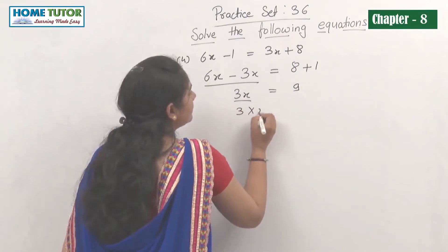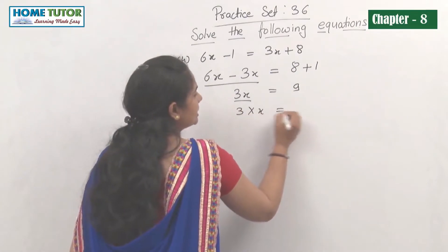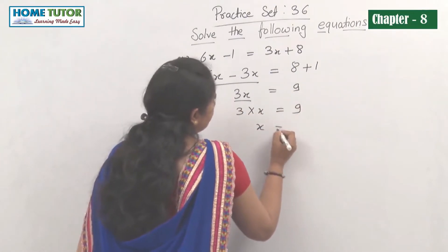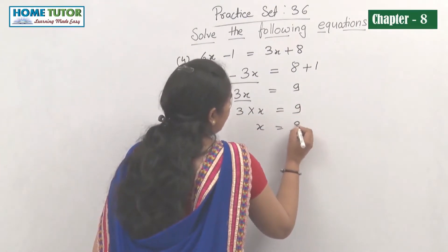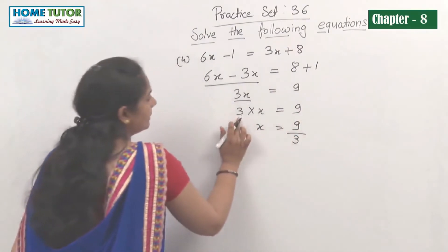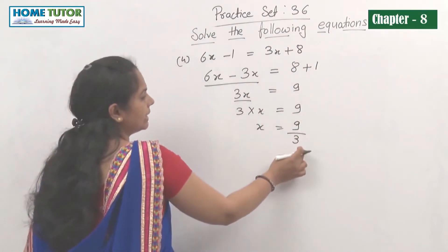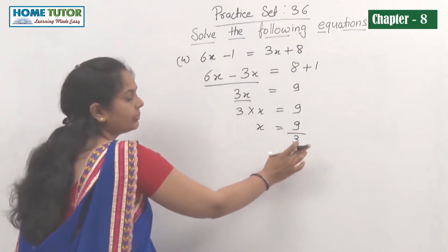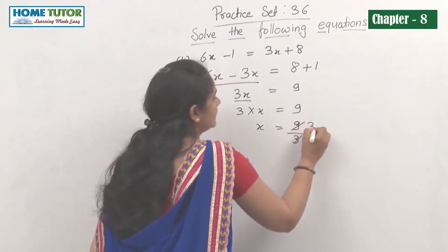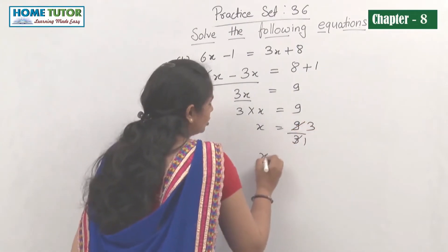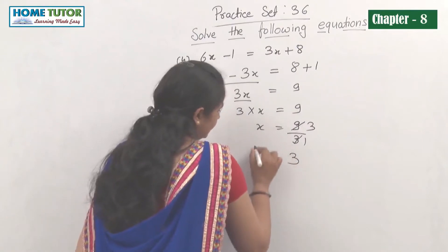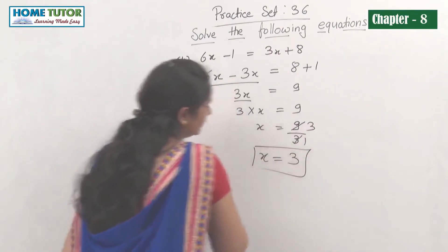So 3x equals 9. The multiplication of 3 moves to the right as division: x equals 9 divided by 3. Since 3 threes are 9, the value of x is 3.